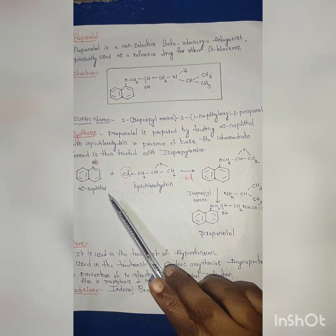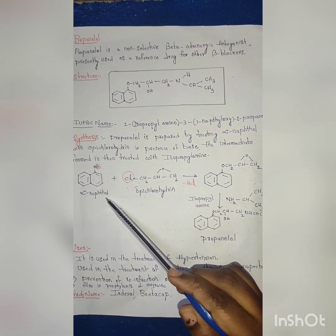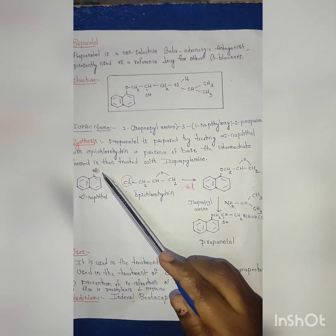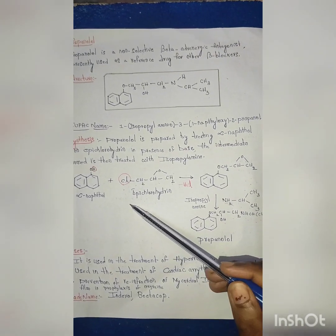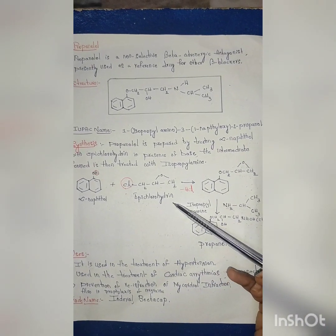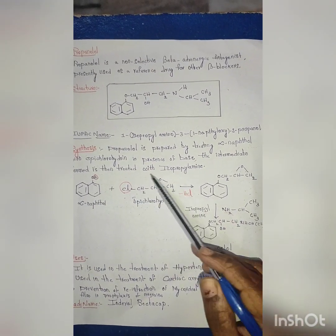Now see, it is alpha-naphthal, it is epichlorohydrin. Naphthal means alcohol, so O-H is present. It is alpha position, it is beta position. Here O-H is present, so it's alpha-naphthal. Now epichlorohydrin - see, as you can see, chlorine from here and H from here will go as HCl. This Cl will remain, and the remaining part will attach here.